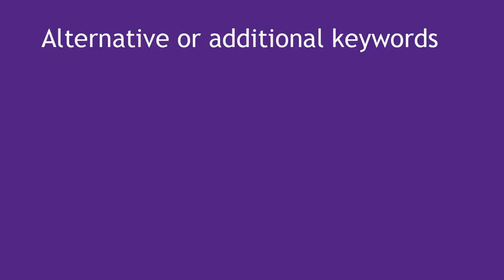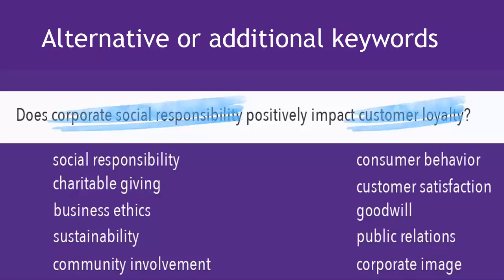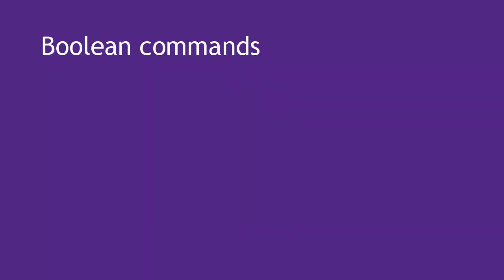Remember how, in the previous video, we brainstormed a list of additional search words? You can use these words to broaden or narrow your search by using Boolean commands. Using Boolean means you can connect your keywords together using an all-caps AND, OR, or NOT. These are not required, so if you're confused, you don't have to use them — your search will still work. But let's explore.